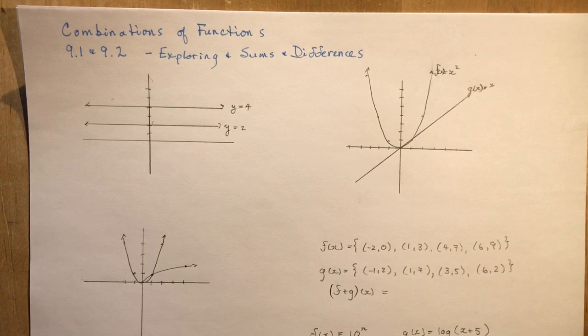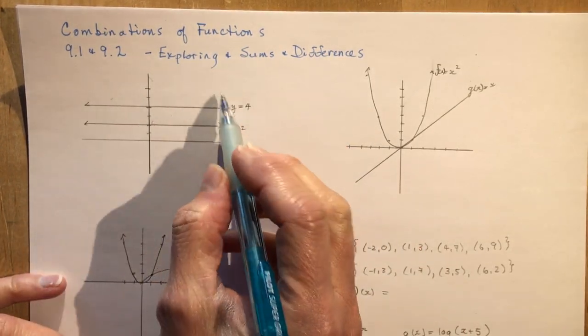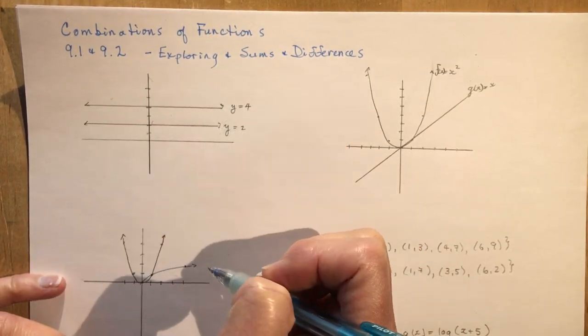I'll discuss it as I go through some of these other exercises from 9.2, which has to do with addition and subtraction of functions. So we're going to combine them by adding and subtracting them together. I'm going to start with something really basic here. Let's say I had two lines y equals 2 and y equals 4.